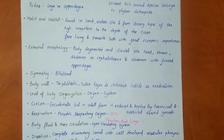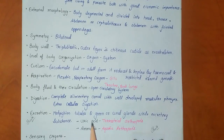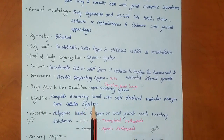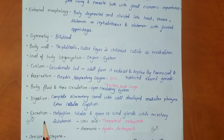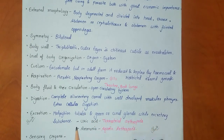Body fluid and circulation: they have an open circulatory system. Digestion is complete with an alimentary canal and a well-developed muscular pharynx; extracellular digestion is present. Excretion occurs via Malpighian tubules and green or coxal glands. The excretory substance is uric acid in terrestrial arthropods and ammonia in aquatic arthropods.